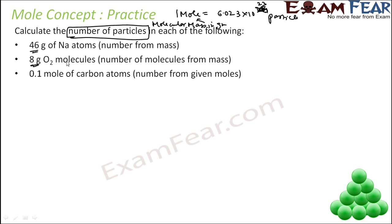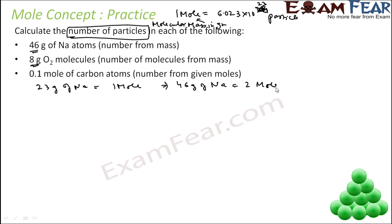The first case: 46 grams of sodium atoms. We know that 23 grams of sodium atom equals 1 mole, since the molecular mass of sodium is 23. So 46 grams of sodium will be 2 moles. And 2 moles is 2 into 6.023 into 10 to the power 23 particles, which equals 1.2044 into 10 to the power 24 particles.